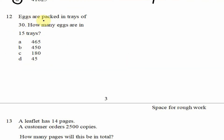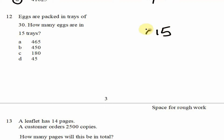Question 12: eggs are packed in trays of 30. How many eggs are in 15 trays? If one tray has 30 eggs, then 15 trays will have 15 times as many eggs, so we calculate 15 times 30.